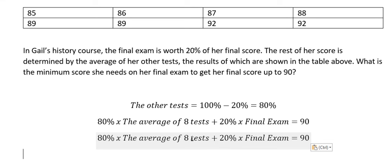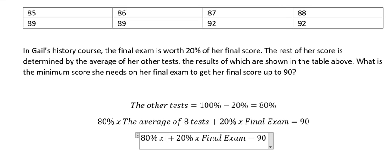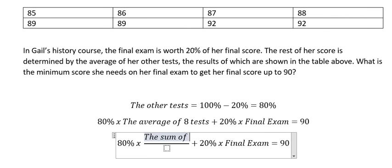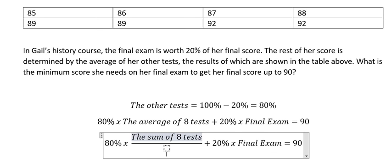The average of 8 tests, that is about the sum of 8 tests divide by the total number of tests. In this situation, we have eight.